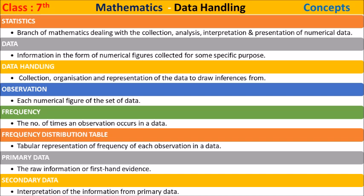Frequency is the number of times an observation occurs in a data set. A frequency distribution table is the tabular representation of the frequency of each observation in data. Primary data is the raw information or first-hand evidence, while secondary data is the interpretation of information from primary data.